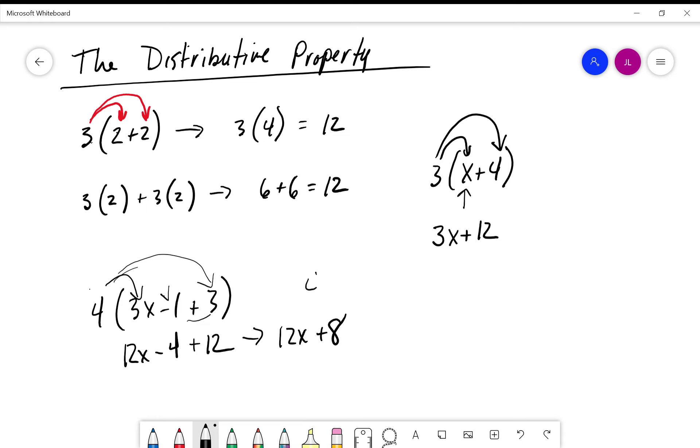We could add the numbers in the parentheses at the beginning too: 4 times 3x, negative 1 plus 3 is plus 2, and this will give us the same thing, 12x plus 8. The distributive property—make sure you understand this because it's very important to know how to do in algebra.